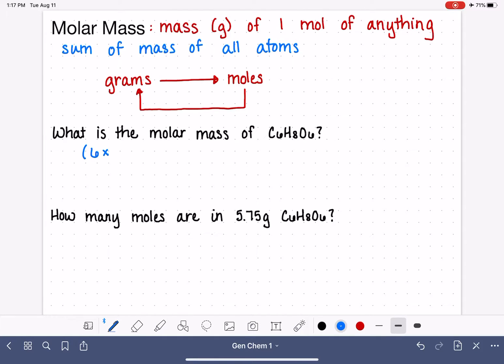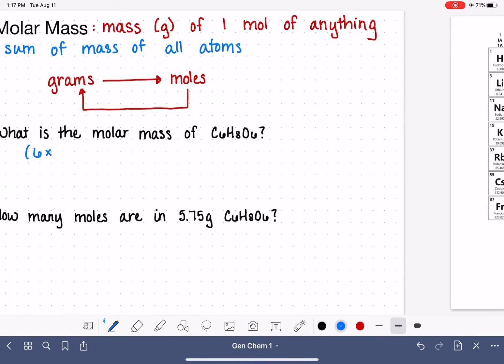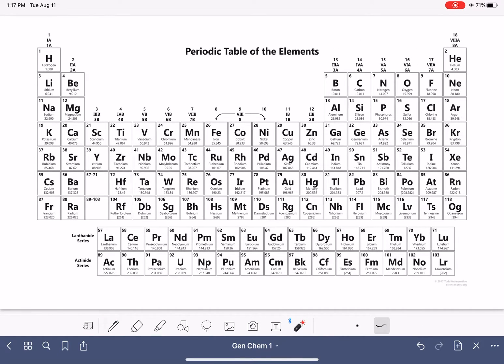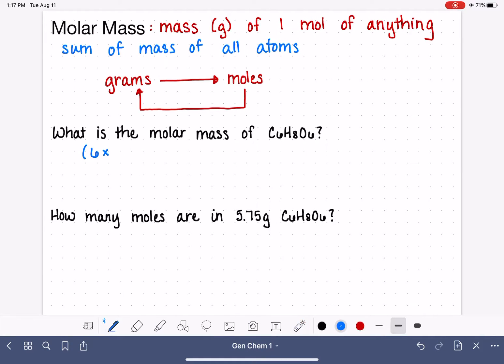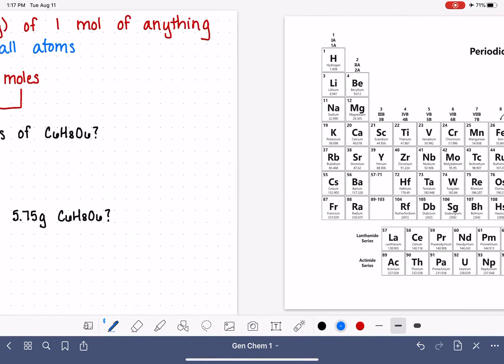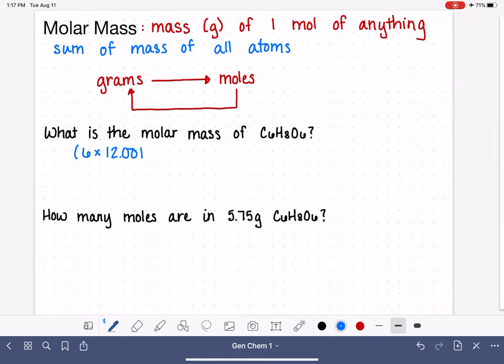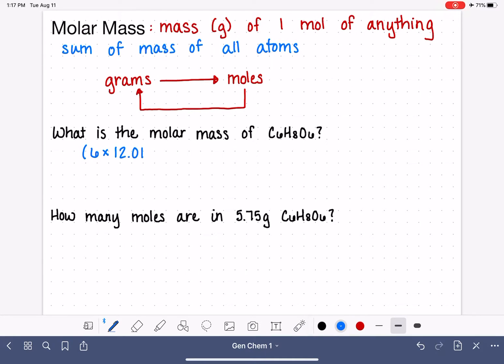If we go over to the periodic table, carbon is right here. The mass we're using is 12.011. Then we're adding the number of hydrogens times its mass, 1.0079, and the number of oxygen atoms times its mass, 15.999.